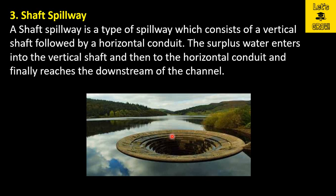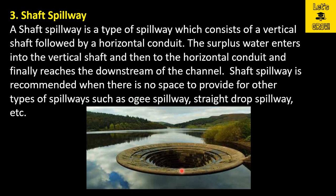This shaft spillway is generally provided when there is no space for the provision of an ogee spillway or any other type of spillway. If you don't have enough space to provide any other type of spillway, you simply use this shaft spillway. This is a vertical shaft — whenever the water exceeds a particular level, the excessive water goes into this shaft. This vertical shaft is connected to a horizontal conduit, which passes through the dam body or its foundation, from where the excessive water is released.